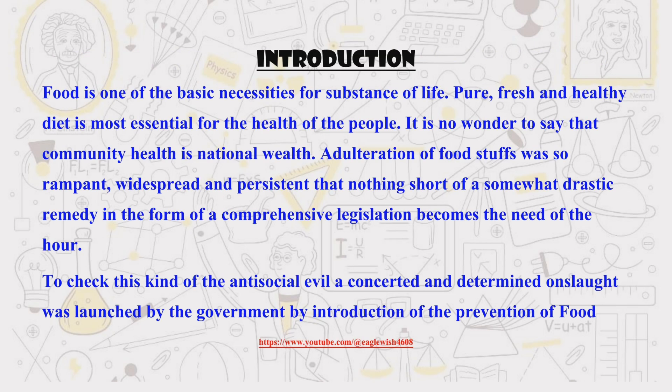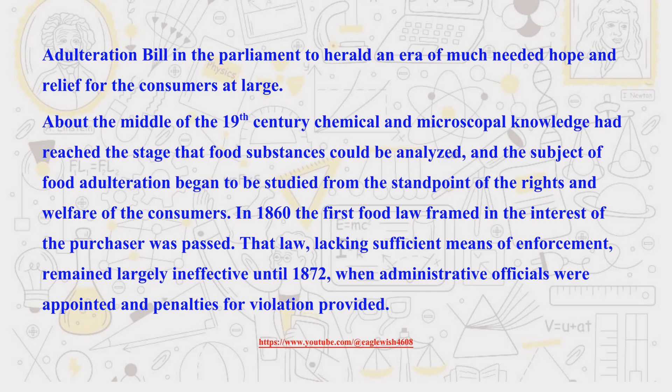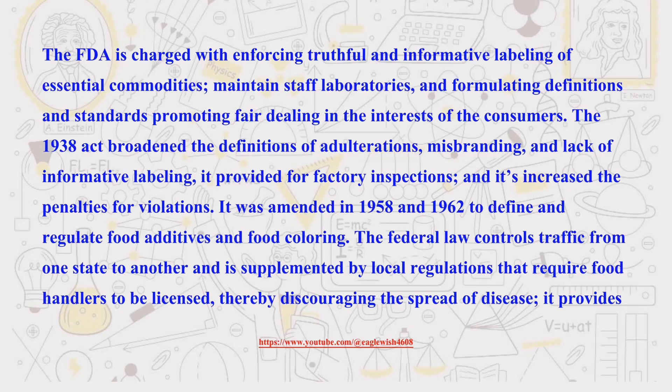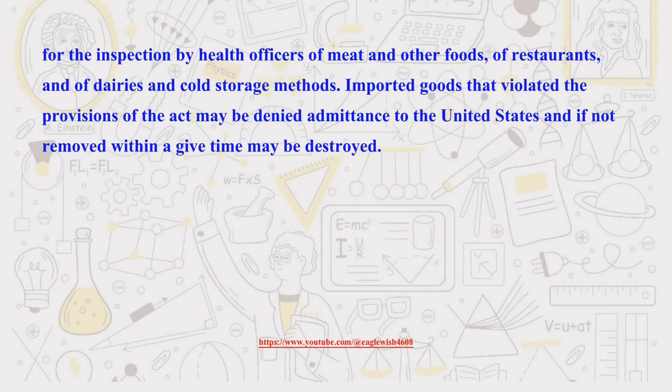Let's start with an important introduction to food adulteration itself. What exactly is it, and why is it such a serious concern? Food adulteration is the act of intentionally or unintentionally compromising the quality or safety of food by adding, substituting, removing, or misrepresenting ingredients or substances in a deceptive or harmful manner. It is a huge concern because it jeopardizes public health by introducing toxins, reduces nutritional value, and deceives consumers, undermining trust and fairness in the food system.